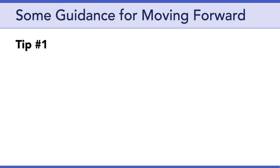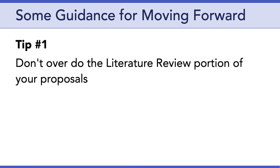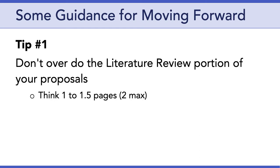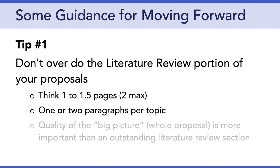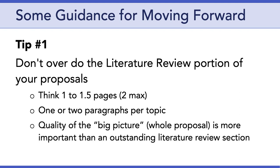Tip number one: don't overdo the literature review portion of your proposals. This is not your dissertation — it's just a proposal. So keep the literature review short. Think one to one and a half pages, two pages maximum. Within those pages, just one or two paragraphs per topic. The quality of the big picture of your whole proposal is actually more important than having an outstanding literature review section.